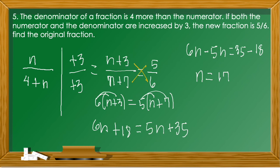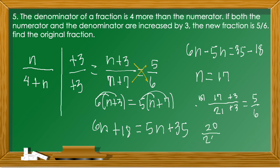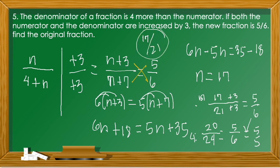Substituting n = 17: the original fraction is 17/(4 + 17) = 17/21. Checking: adding 3 to both gives 20/24, which simplifies by dividing numerator and denominator by 4 to get 5/6. This confirms the answer is correct. The original fraction is 17/21.